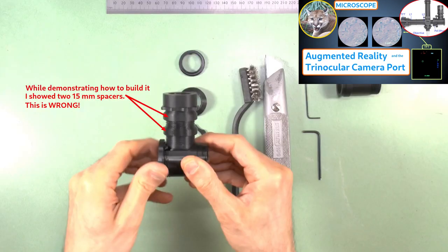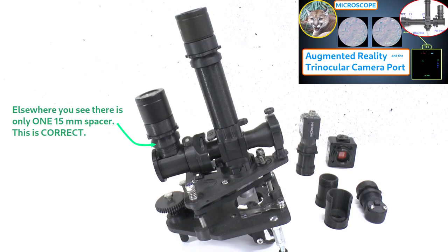One other error I noticed while reviewing my videos, which is not a design error, but simply a demonstration error in the video, is that at one point in the video on the trinocular camera port, I wrongly showed the assembly of the ocular module with two 15mm spacers. This is wrong. Only one spacer should be used, as is correctly shown elsewhere in that video and in other videos I made.